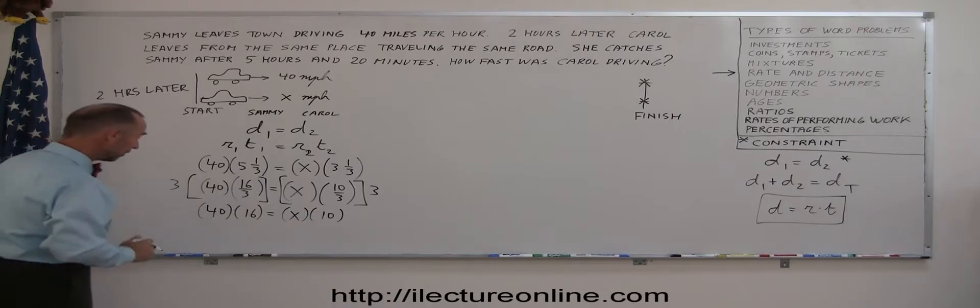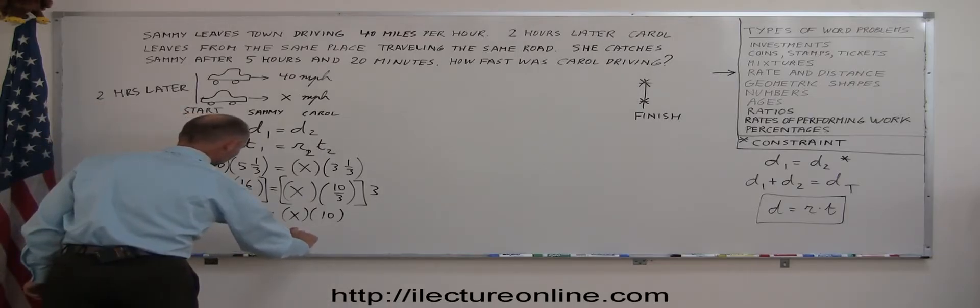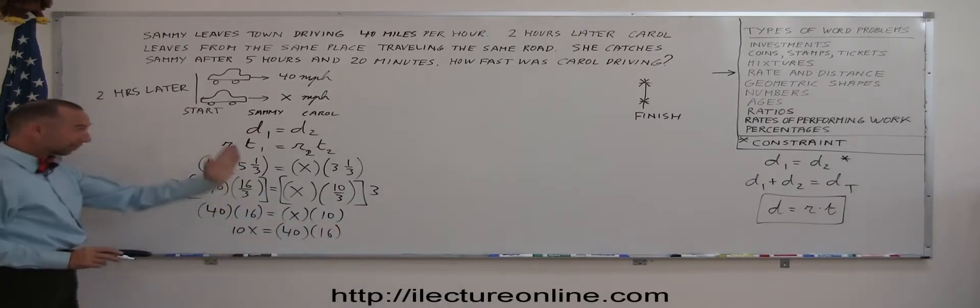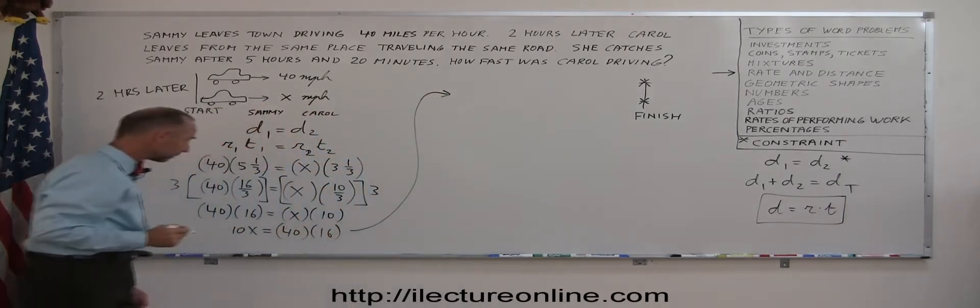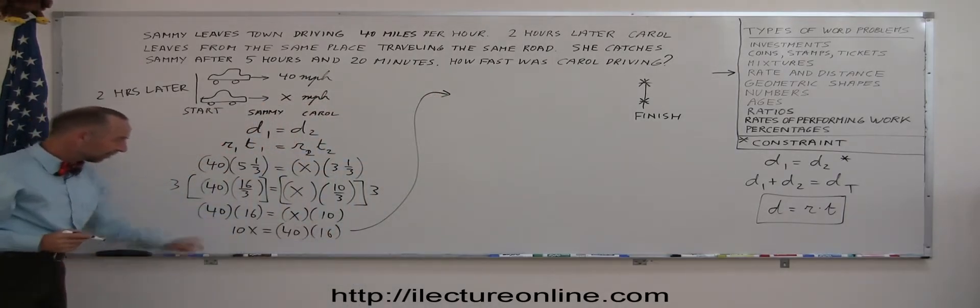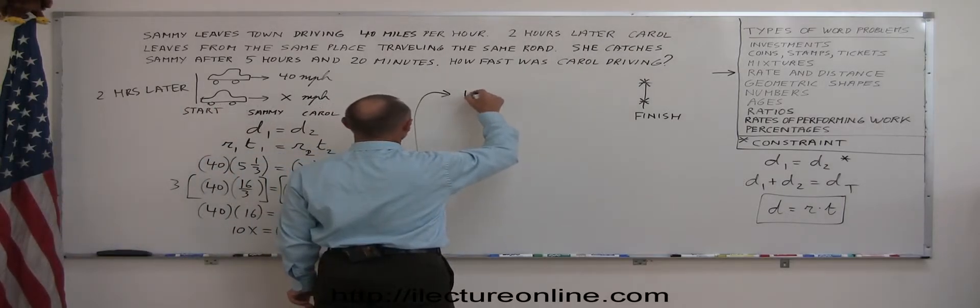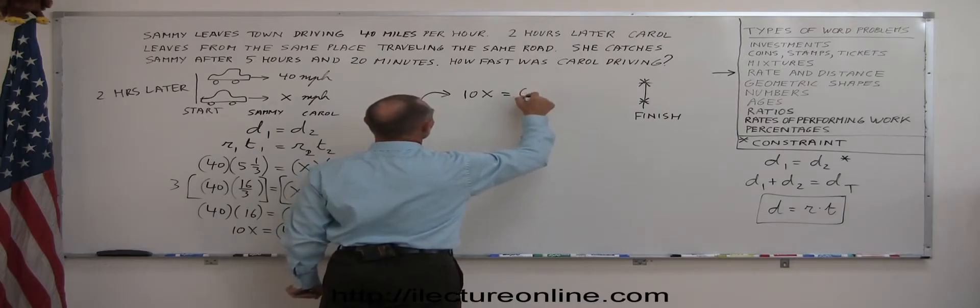I can switch the two around. So I can now write 10x is equal to 40 times 16. And since I'm running out of room here, I'm going to scoot right over to the other side of the board, right there. I can multiply 40 times 16. 4 times 6 is 24, that's 640. So 10x is equal to 640.